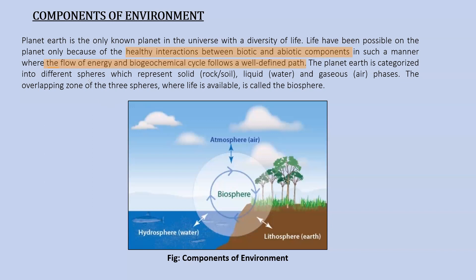Planet Earth is categorized into different spheres: the solid sphere represents rocks and soil, the liquid sphere includes water, and the gaseous sphere includes air. Biosphere is the overlapping zone of these three spheres where life is available. When the hydrosphere, the gaseous, and the solid spheres overlap each other, they form a common overlapping region we call the biosphere, and that is the region where life exists.